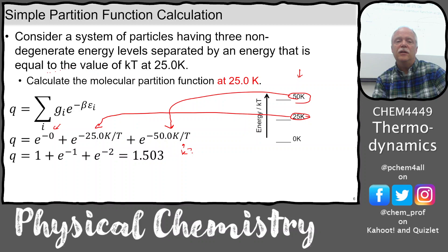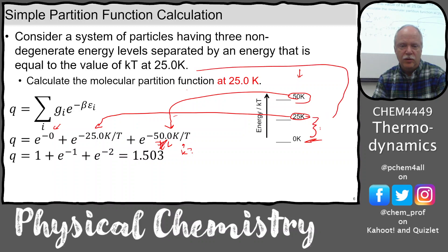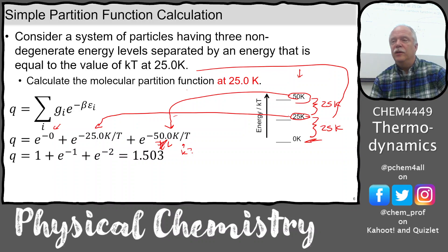If I had not drawn the energy level diagram and just put this on blackboard, would you be able to draw it? There's a system of particles having three non-degenerate energy levels - so I know I've got a three-level system separated by an energy equal to KT at 25 Kelvin. The ground state is always zero. Then we calculate the partition function - it's a sum of three terms, one for each of the energy levels.